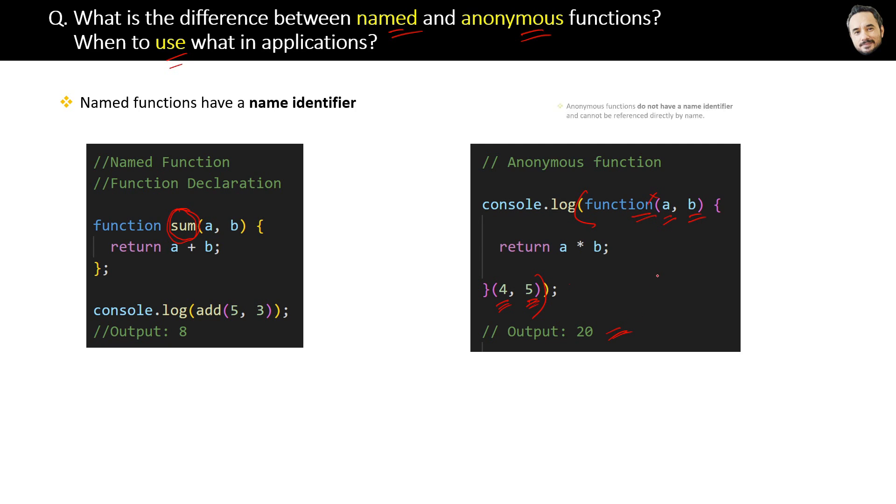The definition of anonymous function is: anonymous functions do not have name identifiers and cannot be referenced or called directly by the name, like we can call named functions.